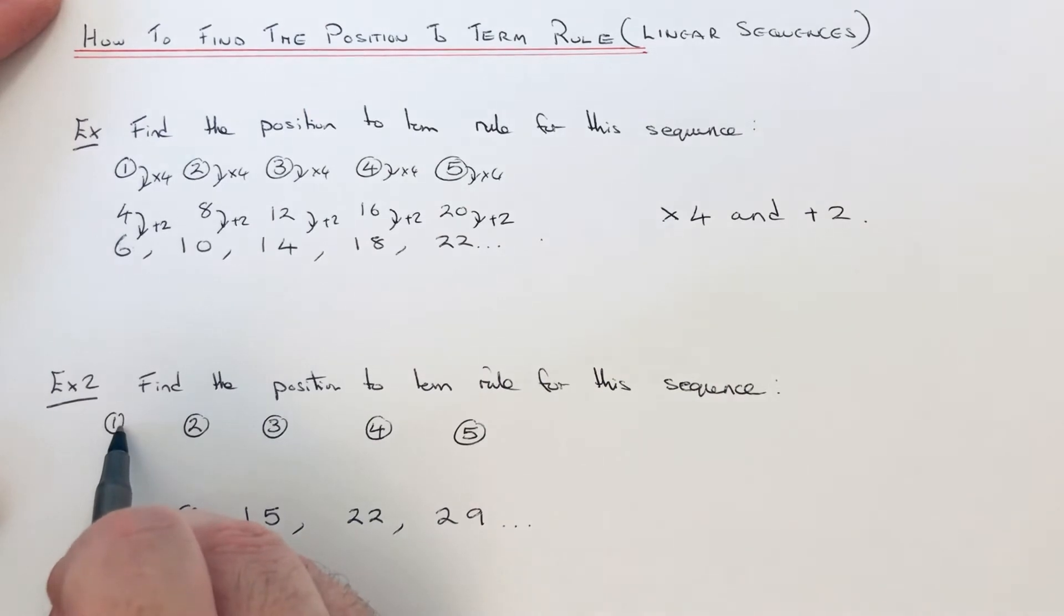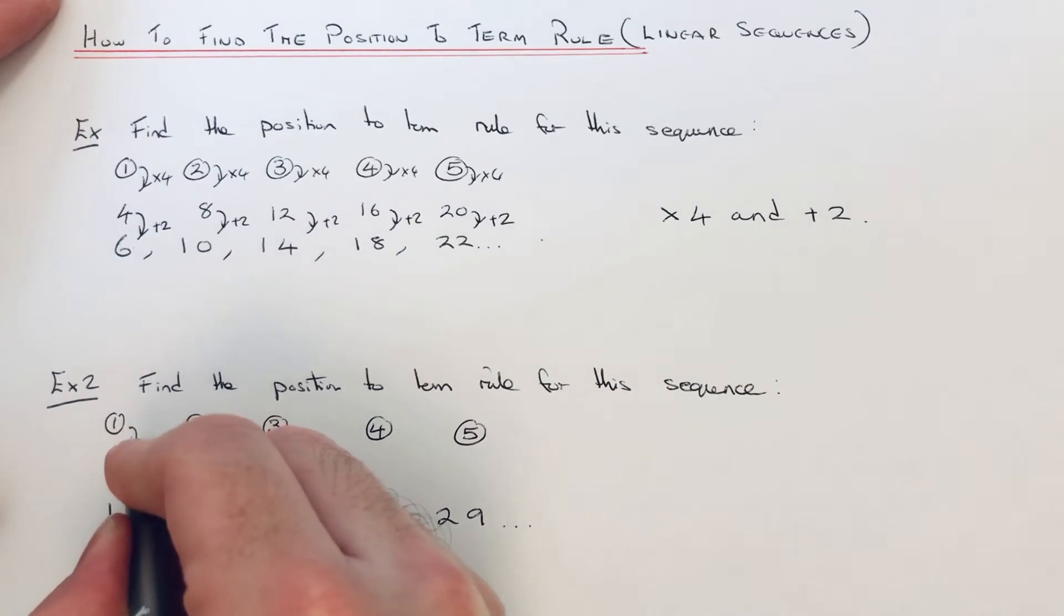Let's have a look at what the sequence is increasing by. It's going up in sevens, so we're going to times all our position numbers by 7.